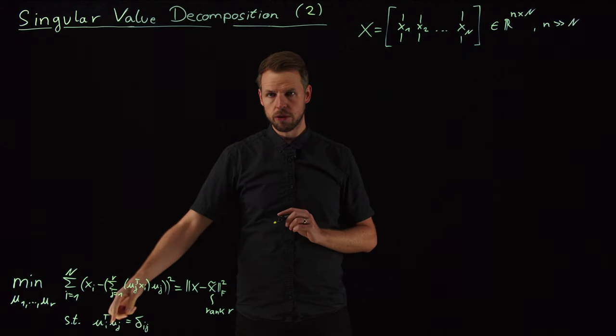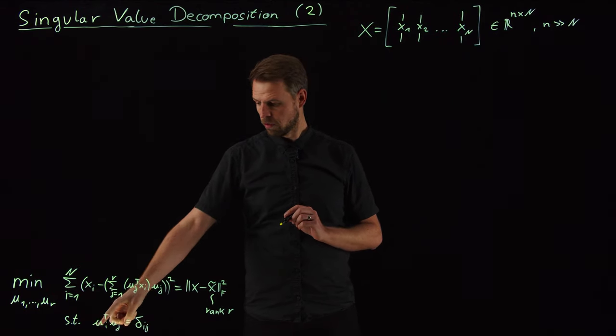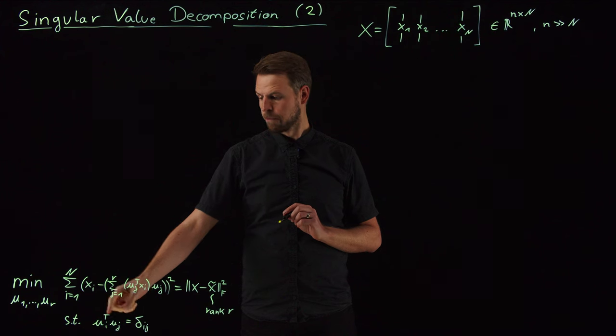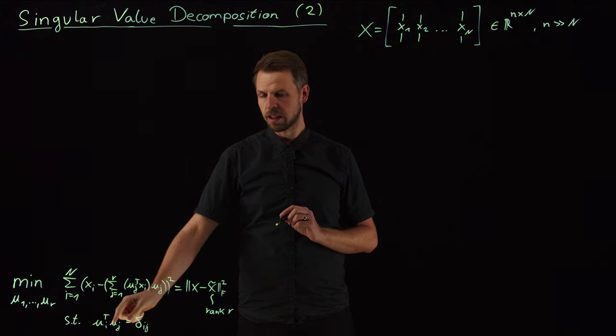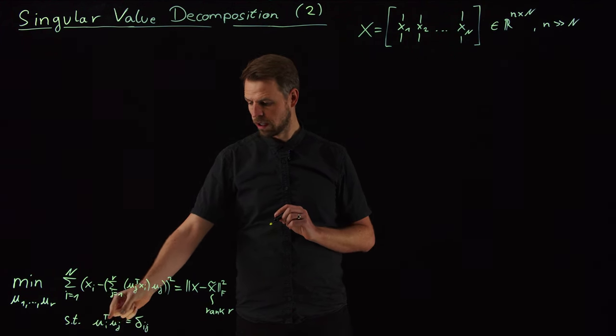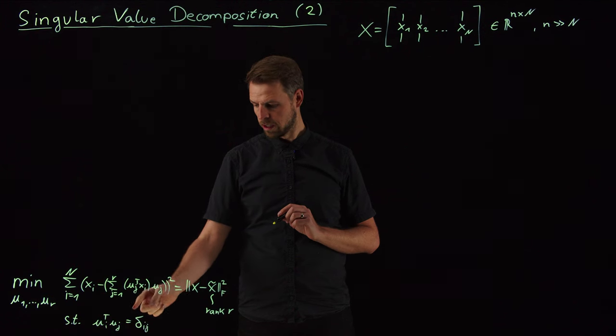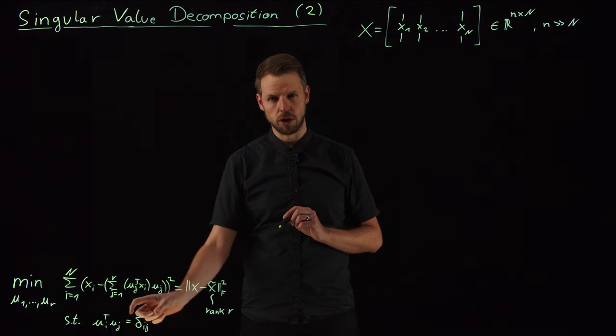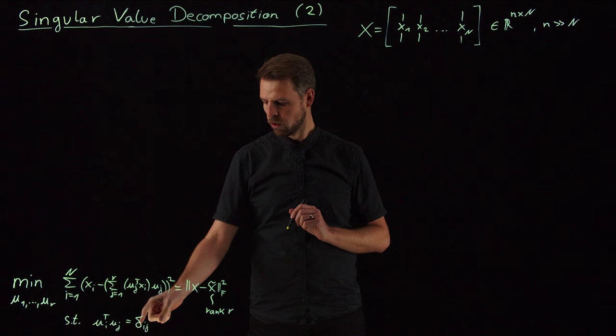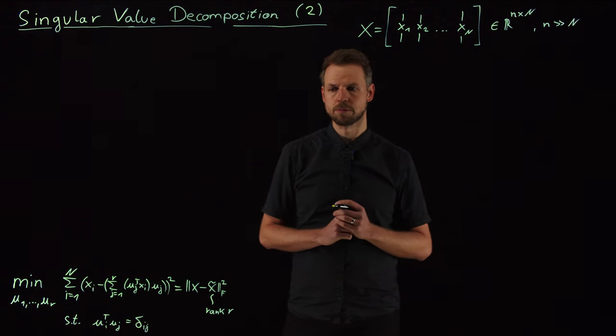The constraint is that this should be an orthonormal basis, meaning that every of these vectors has unit length and they are orthogonal to one another. So the inner product between ui and uj is 1 if i equals j, so this is the Kronecker delta, and it's 0 if i is not equal to j.